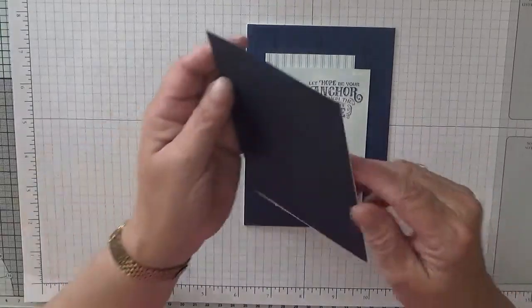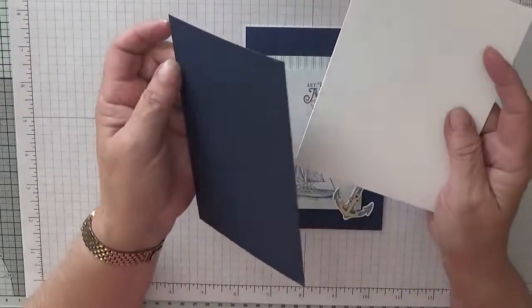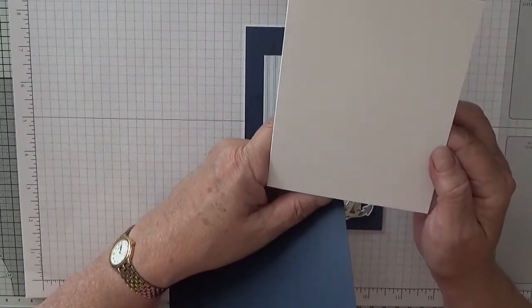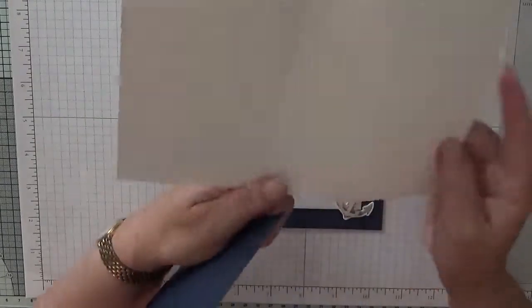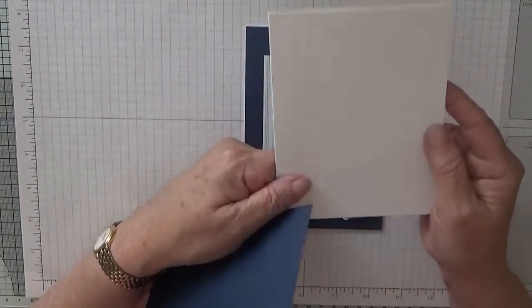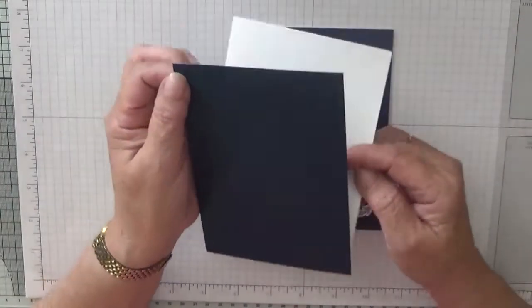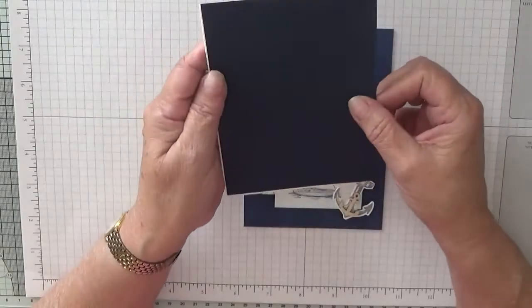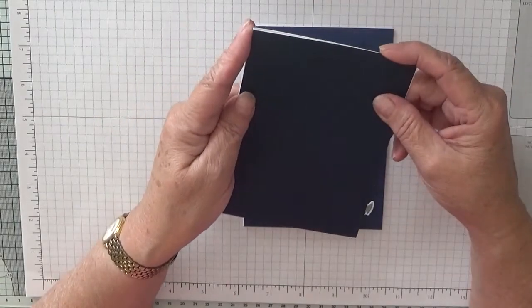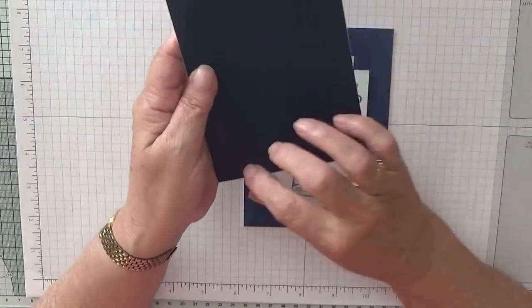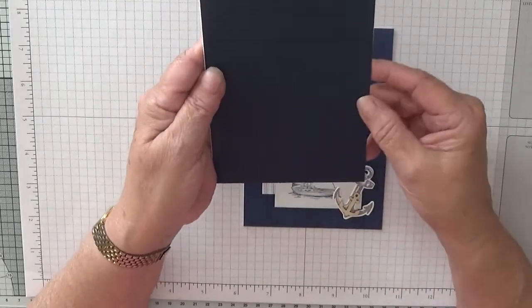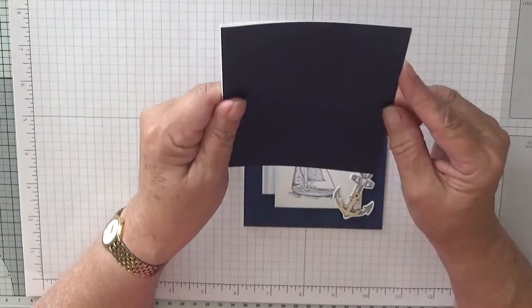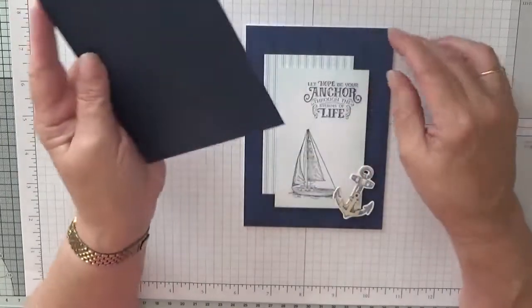So, to make this card I've got a white card base of 8 and a quarter by 5 and 7 eighths, scored at 4 and 1 eighth and folded in half. And I've got a piece of knight and navy at 5 and 7 eighths by 4 and 1 eighths. The reason I've got that is I didn't have a full sheet of knight and navy left to make a card base. So I'm just adding that onto my white base.